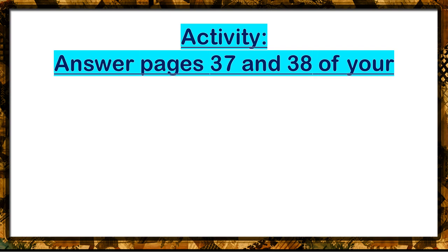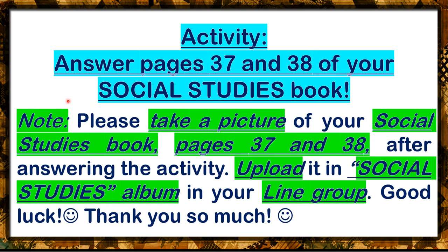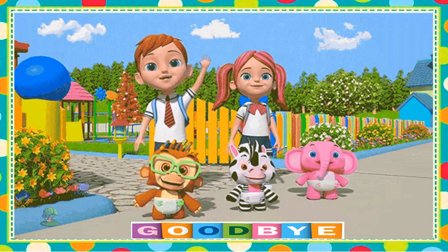For your activity, please answer pages 37 and 38 of your Social Studies book. Please take a picture of pages 37 and 38 after answering and upload it in the Social Studies album in your LINE group. Good luck and thank you so much. We have now come to the end of our online discussion. If you have any questions, comments, or suggestions, please feel free to call Miss MJ on my personal online account or send me a message. I hope you have learned something today about Asia's natural vegetation. Until next time — take care, stay safe, goodbye everyone!